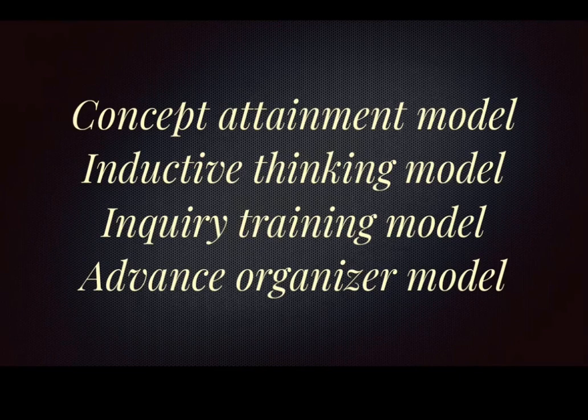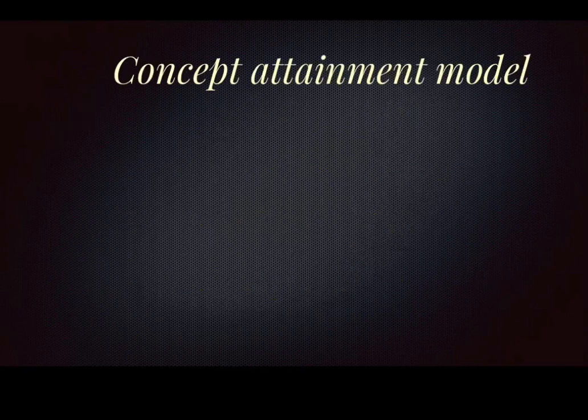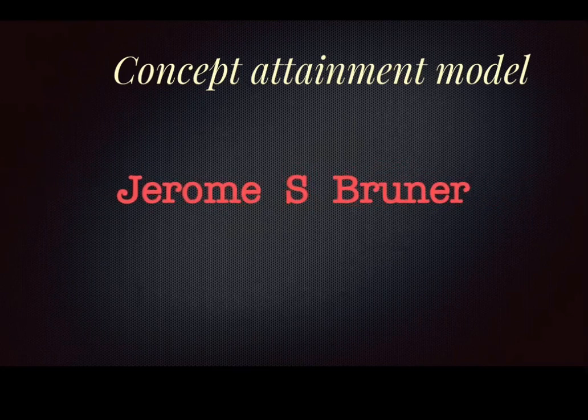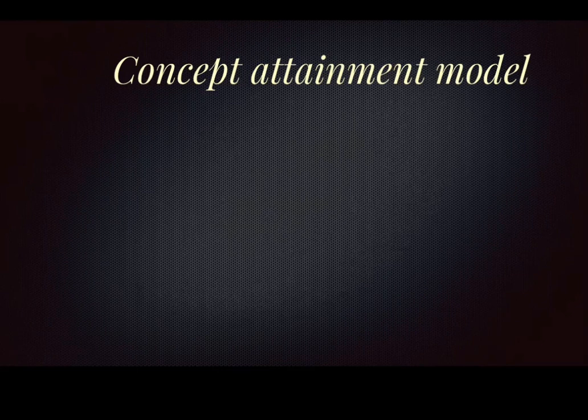Now we look at four models with short explanations. First is the concept attainment model, proposed by Jerome S. Bruner. This model emerged out of the study of the thinking process of human beings. It is used to teach concepts to students, and its assumption is that human beings have the capacity to discriminate and to categorize things into groups.